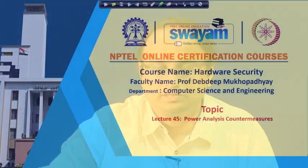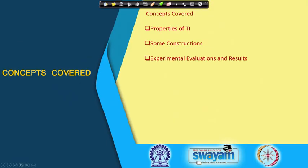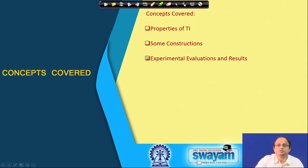Welcome back to this class on hardware security. We shall be continuing our discussions on threshold implementation. As we have seen in the last class, the idea of threshold implementations is required to improve upon a basic masking scheme which was insecure against glitches. In today's class we shall be defining the properties of TI and also see some potential constructions and some case studies based on that.